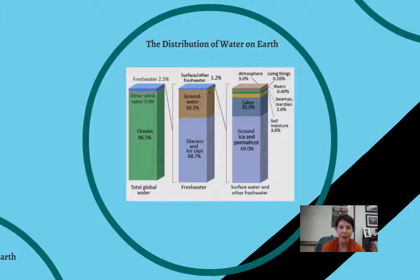So if we take just that little tip right here, just the top of this column, the surface and other fresh water, and we say, okay, where is that fresh water? Well, we can find some of it in the atmosphere in the form of gaseous water, right? Water vapor. Some of it is inside living things, inside their bodies, in rivers, swamps, marshes. And some of it is in the moisture in our soil. About 21% of it is in lakes. And then about 70% of it is frozen as ice or permafrost.